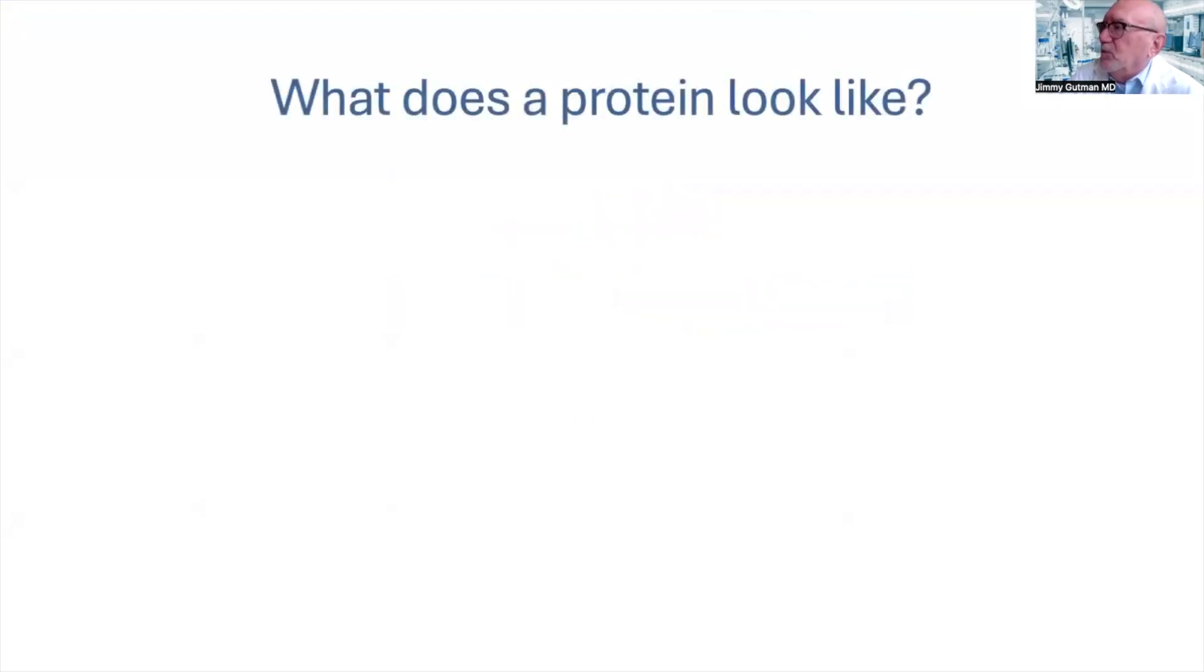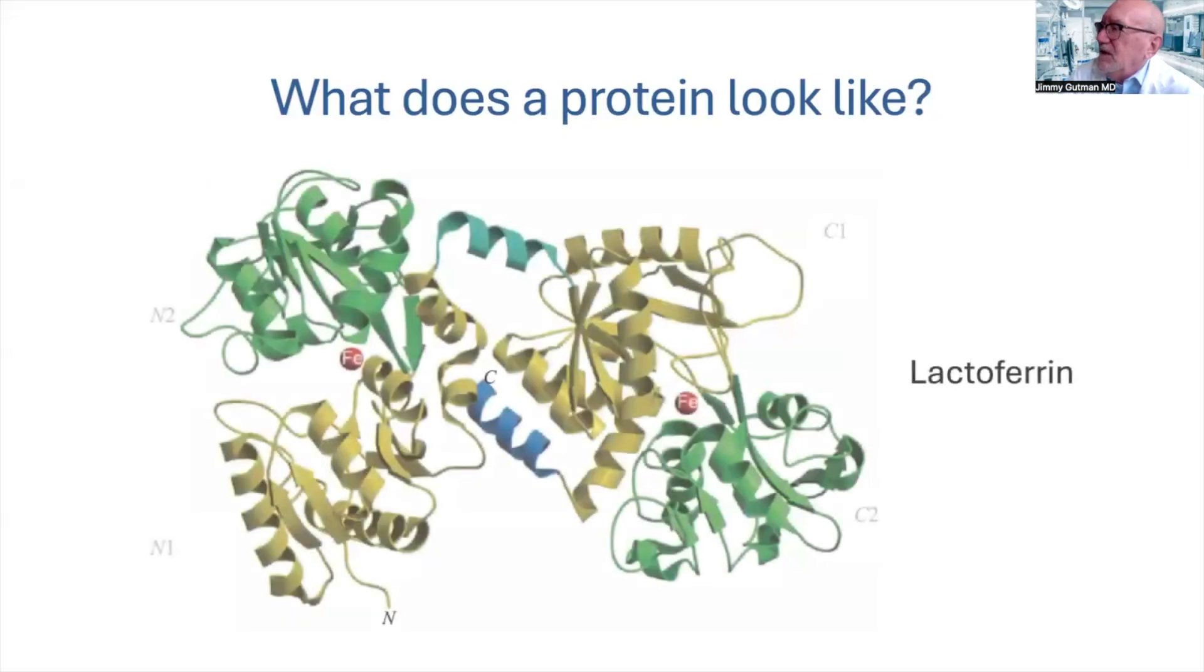So let's start by looking at what a protein actually looks like in real life. We're learning more and more about the shapes and configurations of proteins because of artificial intelligence and because of molecular chemistry. Here we're looking at lactoferrin, one of the active proteins in Immunocal. We see that it has a complicated shape with bands and curls and strips and so on.